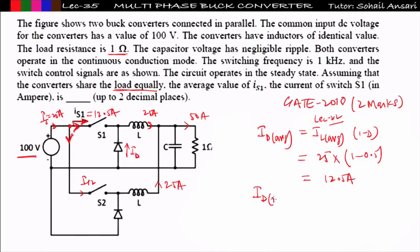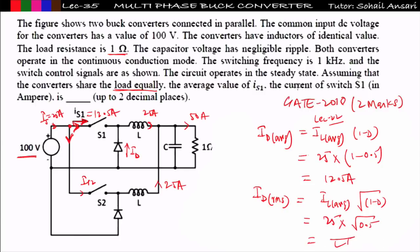If the question asks for the RMS value of diode current: iD_rms = iL_avg × √(1 − D), all these formulas derived in lecture 22. So: 25 × √0.5 — whatever you get is the answer. Each and every formula from the buck converter in lecture 22 remains valid here. Only the current rating changes: both inductors share the common load. If load current is 100 A, each inductor carries 50 A.